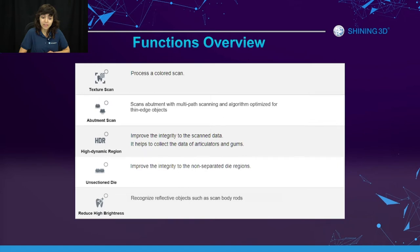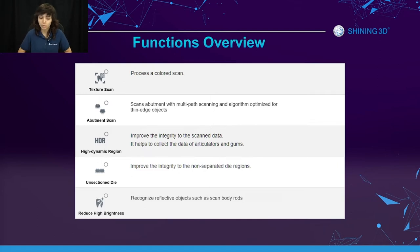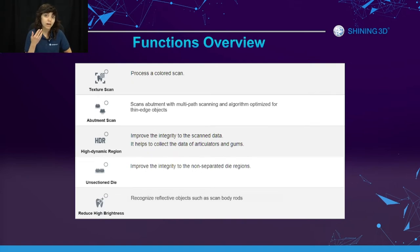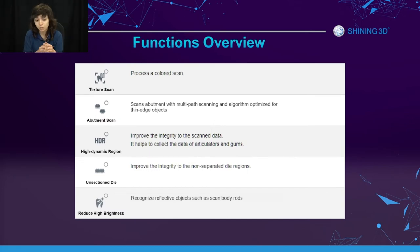Similarly to the abutment scan, the unsectioned dye scan uses a different mechanism to improve accuracy of non-sectioned dye areas, since they have a different design than the rest of the model. The reduce high brightness scan — also called the metal tooth scan or metal object scan — helps scan areas that might be especially reflective, such as an abutment rod made of metal. When the scanner shines light onto it, the reflection can disrupt normal capture. This feature allows the scanner to readjust for that reflection and capture the metallic area more accurately.